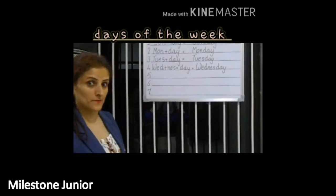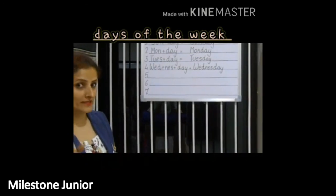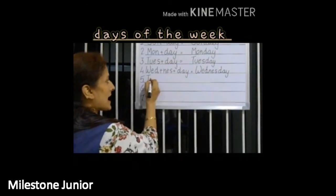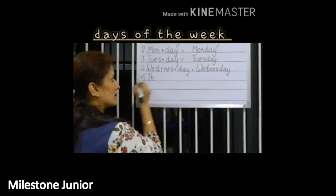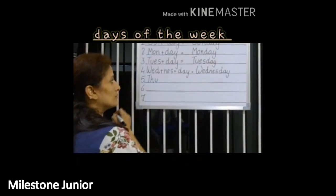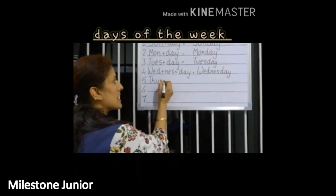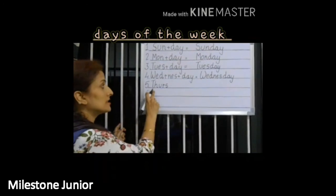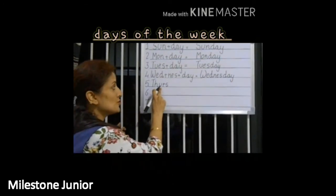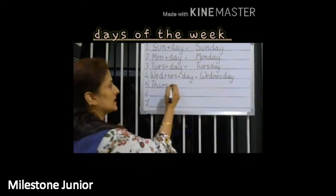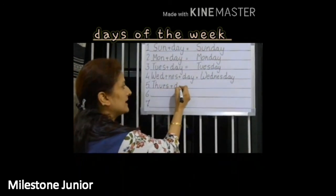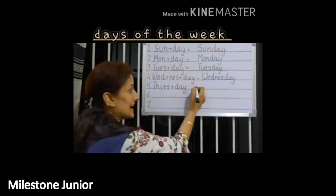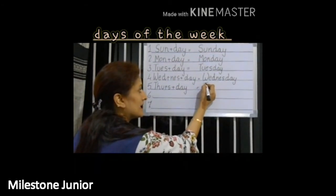Now, Thursday. Thurs Day. What is the spelling of Thursday? Thurs: T-H-U-R-S — Thurs. And Day: D-A-Y. That is Thursday.